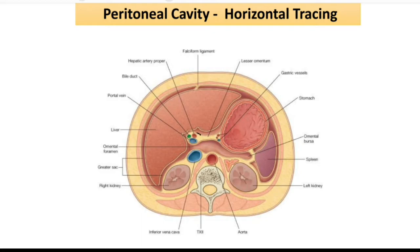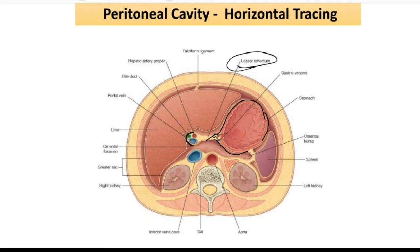Near the porta hepatis, this layer is reflecting and enclosing the stomach. This portion is the lesser omentum, and this is the right free margin of the lesser omentum. It is containing the portal vein, bile duct, and hepatic artery — these are the contents of the lesser omentum near the porta hepatis. Toward the stomach, the contents of the lesser omentum are the gastric vessels: the left gastric artery and the right gastric artery.